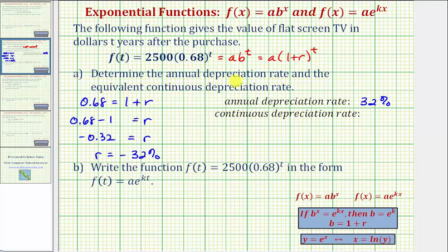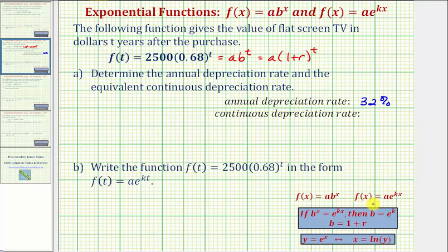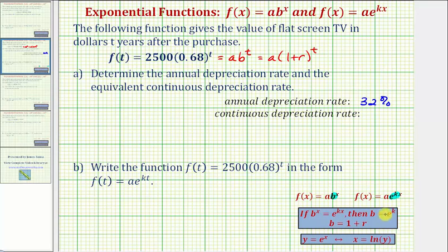Now we're asked to determine the equivalent continuous depreciation rate. To do this, we need to recognize that when we have an exponential function with base e, in the form f of x equals a times e raised to the power of kx, k will give us the continuous growth or decay rate. To find k, we want these two exponential functions to be equivalent, meaning b raised to the power of x equals e raised to the power of kx, so the base b must equal e to the k.